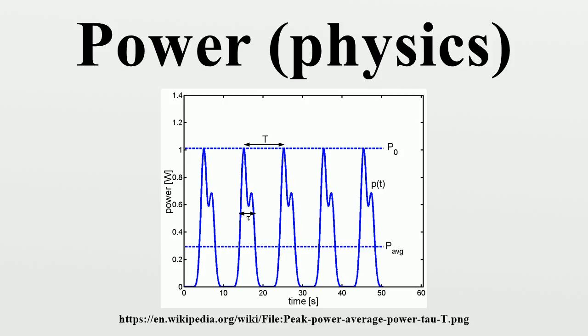The instantaneous electrical power P delivered to a component is given by the formula where P is the instantaneous power measured in watts, V is the potential difference across the component measured in volts, and I is the current through it measured in amperes. If the component is a resistor with time-invariant voltage to current ratio, then power can be expressed where R is the resistance measured in ohms.